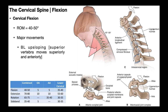I also mentioned that the anterior surface has a smaller length in cervical flexion. So that means the anterior longitudinal ligament is going to be put on laxity — it has some laxity in it.